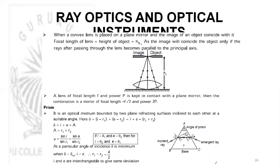When the image coincides with the object, the focal length of the lens will be equal to the height of the object, since after passing through the lens the rays become parallel to the principal axis.